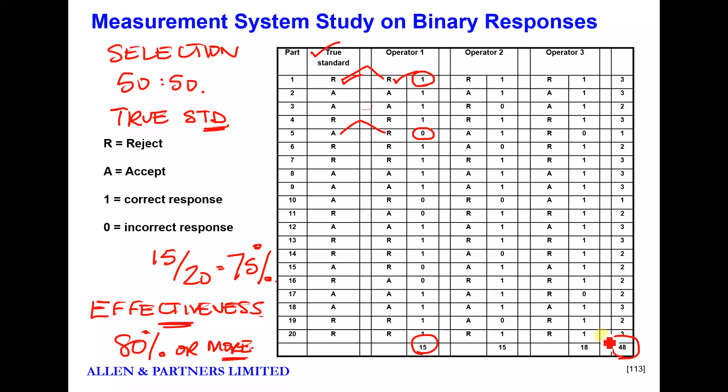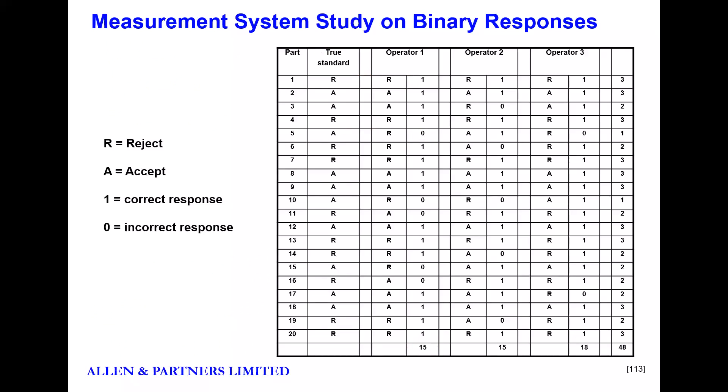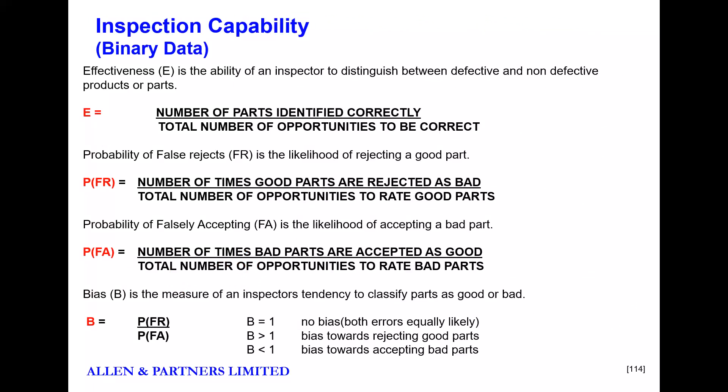It's a very simple procedure. We can work out the effectiveness for an individual operator - 15 out of 20. We could work out the effectiveness for the whole test. We scored 48 correct out of the 60 attempts that were made to assess parts, so this measurement system is 80% effective. That would be the first measure we would look at - how effective is the measurement system.